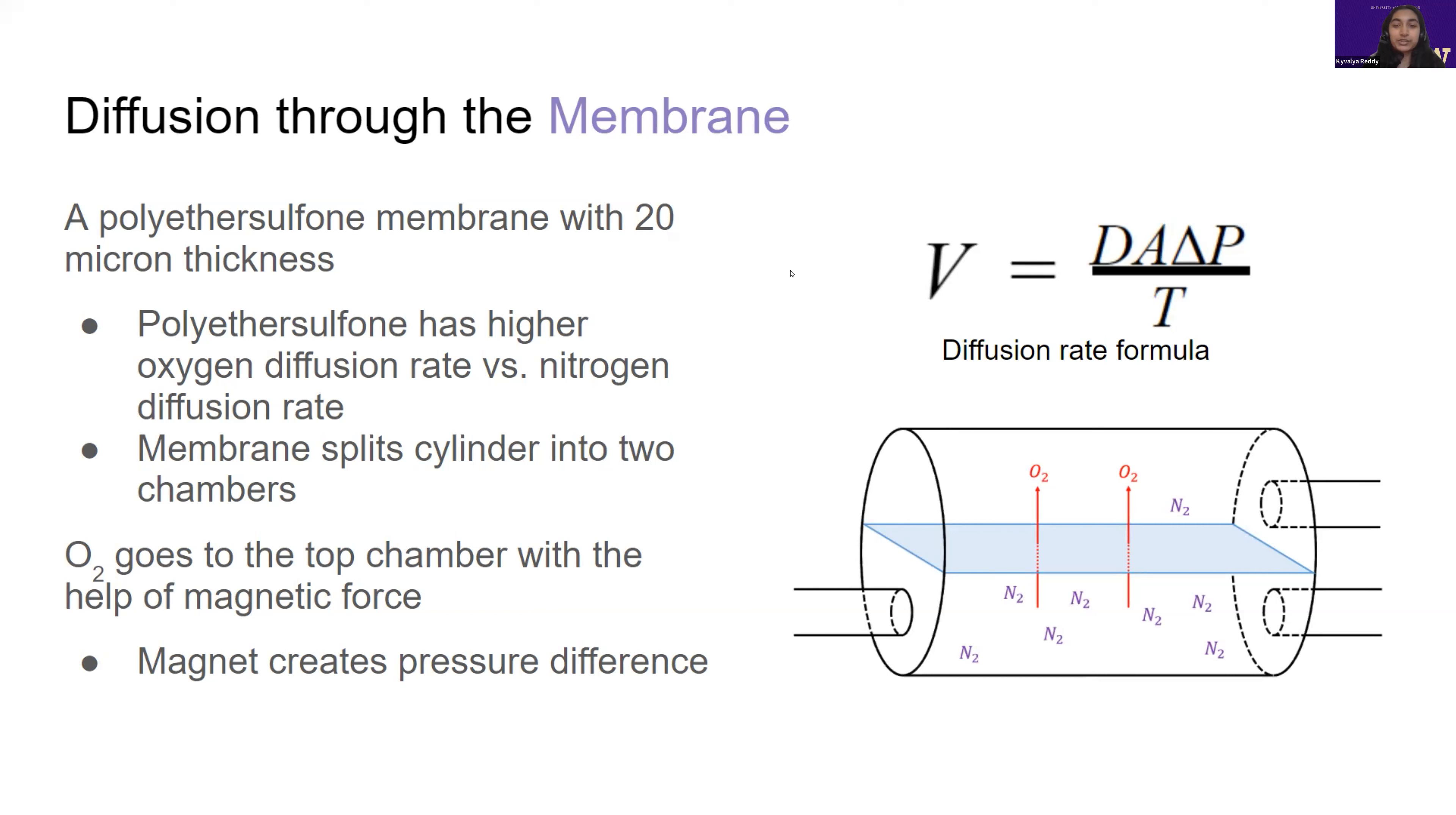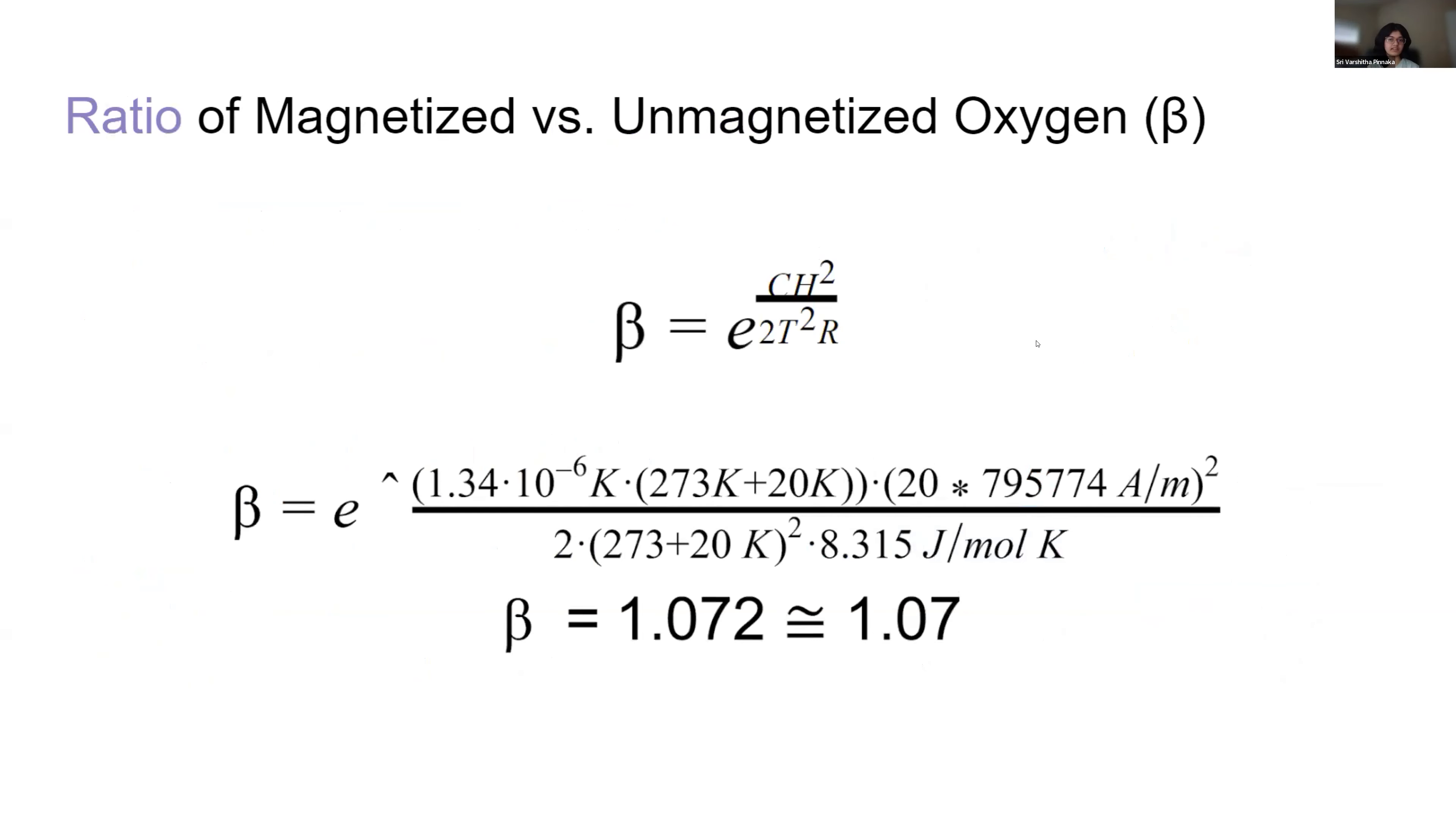As you can see in the formula, the diffusion rate also depends on the pressure difference, which is delta P. We wanted to quantify this and see how much magnetized oxygen would be in the top chamber versus the lower chamber. When we plugged this into the equation with a magnet force of 20 teslas, which is pretty strong, we got a ratio of 1.07, which means there's 7% more oxygen in the upper chamber than the lower chamber. We did use a very strong magnet, but we thought this ratio was high enough, so we proceeded with our design.